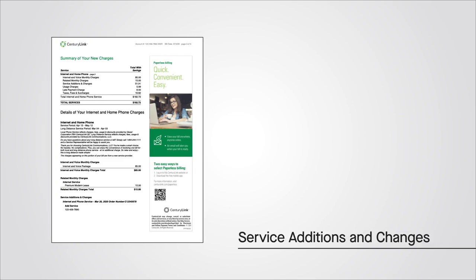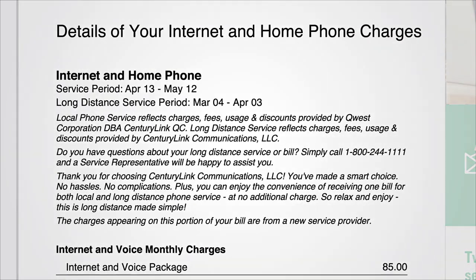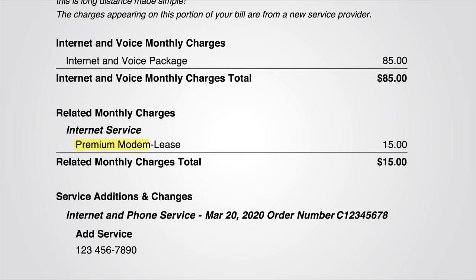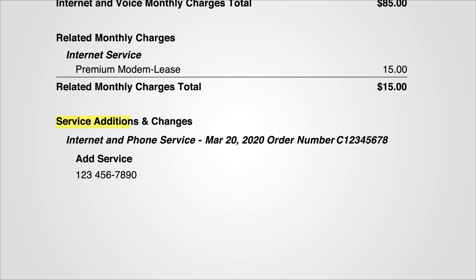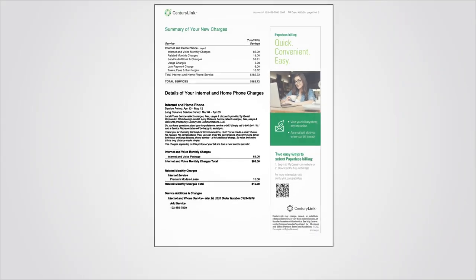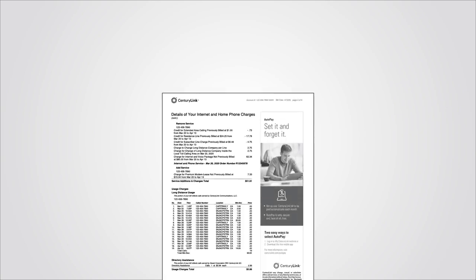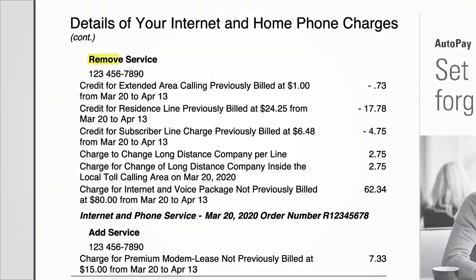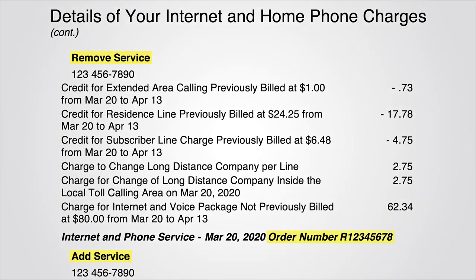Customers who lease a modem from CenturyLink will find those monthly charges in the Details section or Additional Charges and Credits section. If you have recently made changes to your CenturyLink services, you may see a section called Service Additions and Changes. Only some customers based on their area will see this section, and it will only display when applicable to your account. This section will show you what services you removed, added, or changed and the order number for the changes made. It will also show any amounts credited back to you or charged to you based on those changes.